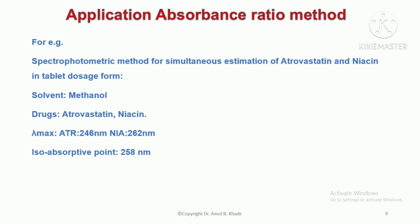Substituting the absorbance and absorptivity values along with Qm into the equations, we can solve for the concentration of drug X and drug Y. This method can be applied to a number of samples with two components. One application is the spectrophotometric simultaneous estimation of atorvastatin and niacin in tablet dosage form, using methanol as solvent. Without separating them, we can find the concentration of each drug. Atorvastatin has a lambda max of 246 nm and niacin has a lambda max of 262 nm. Atorvastatin and niacin show equal absorptivity at 258 nm — that is their isobestic or isoabsorptive point.